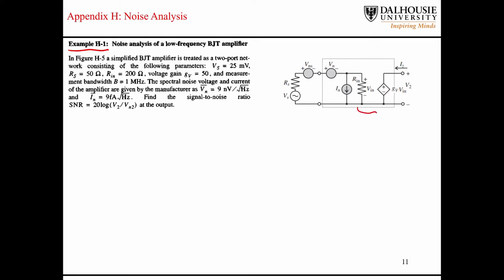So we have a low frequency pi model of a BJT, shown here. We're told that the source has an RMS voltage of 25 millivolts with a source impedance of 50 ohms. We say that the BJT has an input impedance of 200 ohms and a voltage gain of 50. And it mentions a bandwidth of 1 megahertz. So they give us some information here about the spectral noise content of this particular BJT.